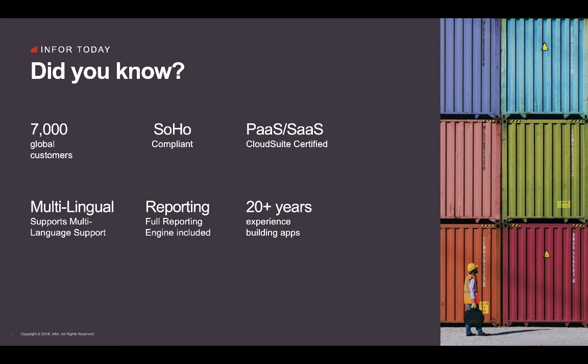A few facts you might not have known: we have 7,000 global customers. This is primarily because CSI/Mongoose is the framework for CSI and its global customer base. However, we are building up our own customer base for extensibility. Due to some new pricing within the ERP frameworks, we're getting a lot more interest in extensibility solutions — probably one of the reasons you're here today.